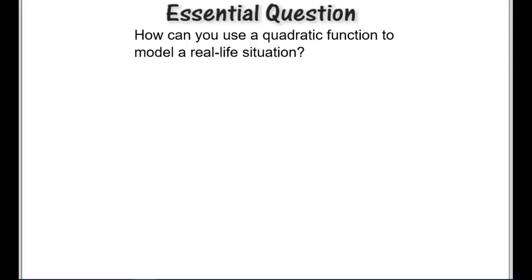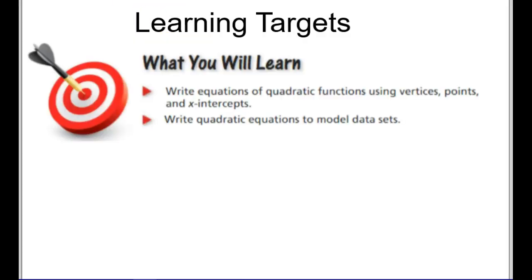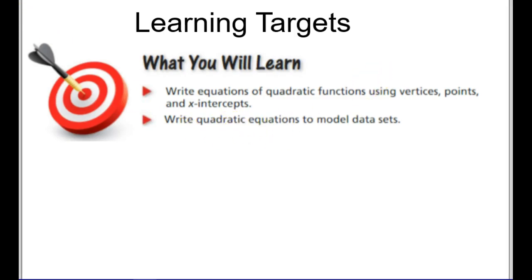Here we're looking at section 2.4, where we take quadratics and model some real-life situations. Our learning targets: first, we're going to write equations of quadratic functions using vertices, points, and x-intercepts. In the last section we used the focus or directrix; now we do it without those. Then we'll write quadratic equations to model data sets, and I'll show you a couple of different ways to do that.